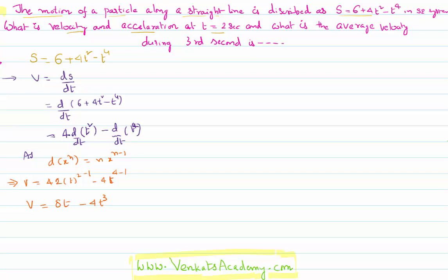Suppose you want the velocity at t = 2 seconds. Just substitute t = 2 into the equation: v = 8×2 − 4×2³ = 16 − 4×8 = 16 − 32 = −16 meters per second. That is the velocity of the body at the given instant of 2 seconds.